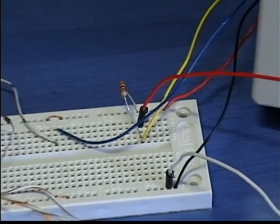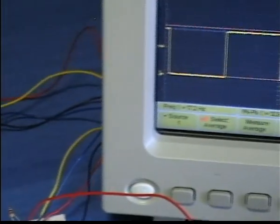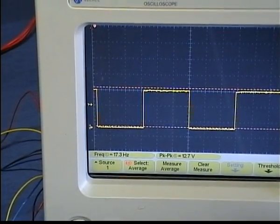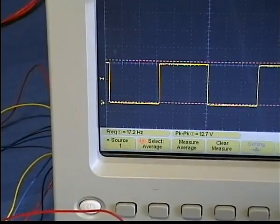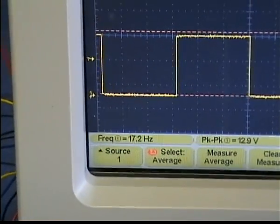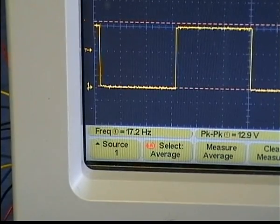Now I will switch the probe to see how the speed of the fan is affected. Due to the fact that this is a 4-wire fan, I can have a very clear RPM feedback from the Hall sensor. The probe is now connected to the tacho wire of the fan.